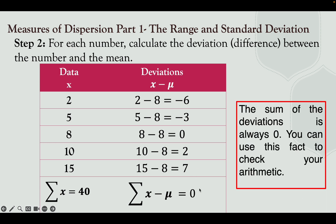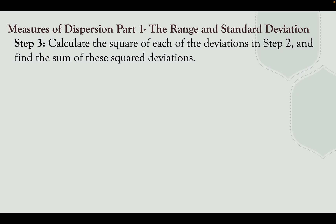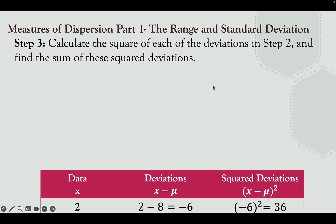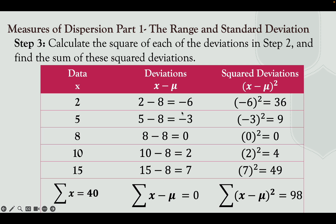Always remember that the sum of the deviations is always 0. In step 3, calculate the square of each deviation — raise each to the power of 2. So: (−6)² = 36; (−3)² = 9; (0)² = 0; (2)² = 4; and (7)² = 49.